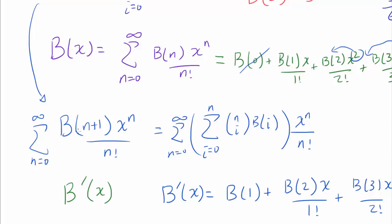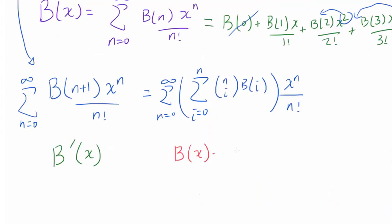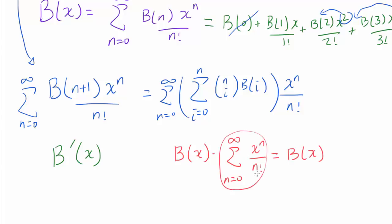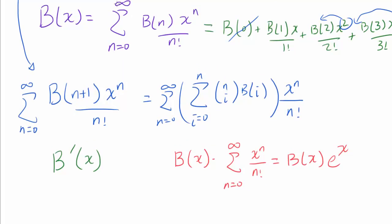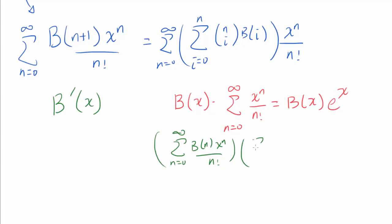Now, how do we simplify the right-hand side? It turns out, very surprisingly, the right-hand side equals b(x) times the summation from n equals 0 to infinity of x to the n over n factorial. You may recognize this summation as e to the x, so the right-hand side is b(x) times e to the x. To show this, let's think about what b(x) times the Taylor series for e to the x gives us. We know b(x) is the summation from n equals 0 to infinity of b(n)·x to the n over n factorial, and we multiply by the summation from n equals 0 to infinity of x to the n over n factorial.